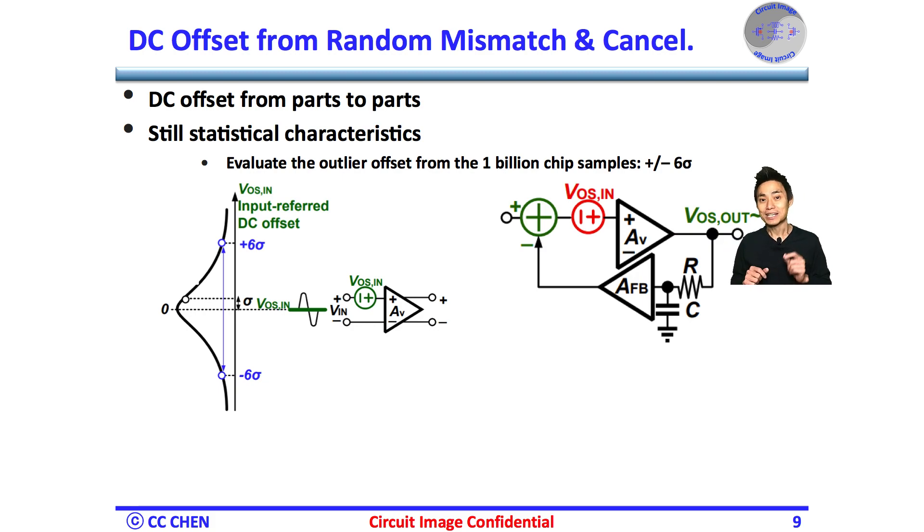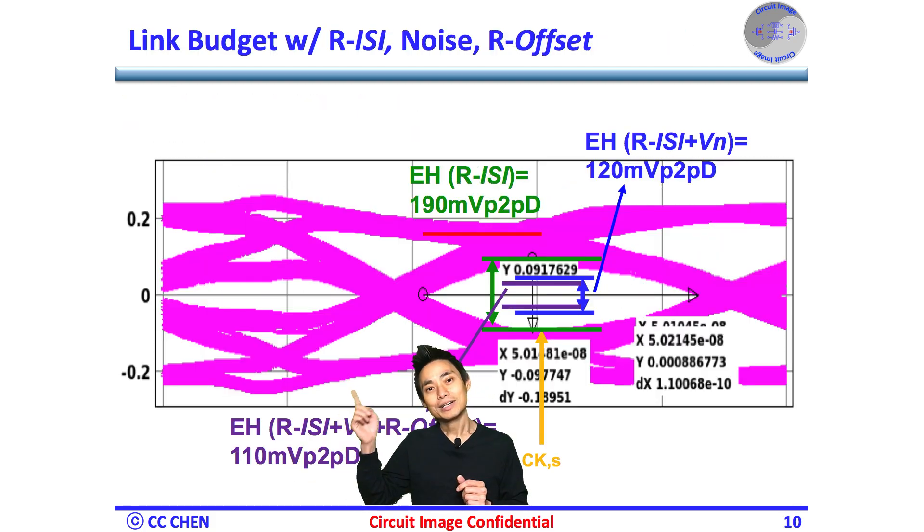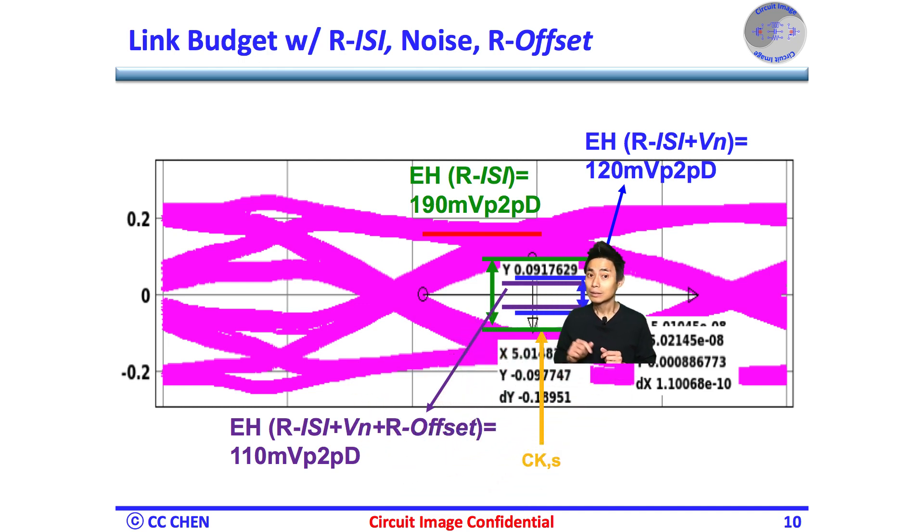Luckily, there are a few DC offset cancellation approach that can reduce the offset to some degree. For example, the residual DC offset under sampler input could be only 5 mV or less. Therefore, the residual eye height margin would be 110 mV peak-to-peak differential.